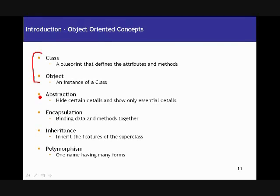Encapsulation is binding data and methods together. The end product of encapsulation would be data hiding. As you implement encapsulation, you actually end up employing the data-hiding functionality. For example, you have an employee class with a salary as an instance variable and a set-salary method. If you don't want anybody to come in and set the salary for an employee, you make use of encapsulation to secure that — so only certain authorized people can make changes to the salary.